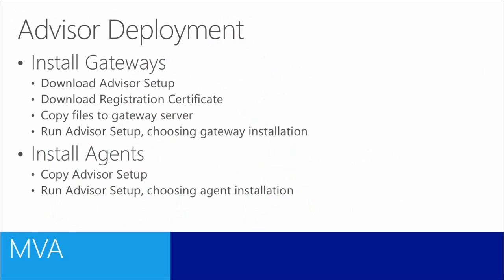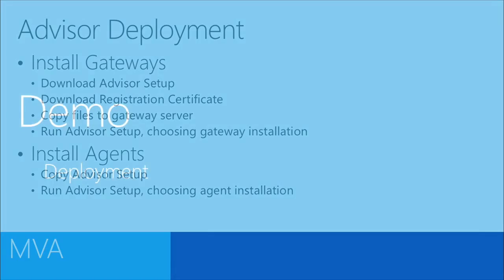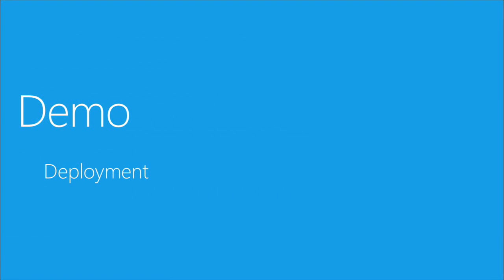These are the steps that you need to perform to install Advisor at a glance. You basically need to install gateways and agents using the Advisor setup. We'll also need to download a registration certificate to identify ourselves as a user. We'll copy the files to whichever machine needs to be turned into a gateway or an agent, and once we're running the Advisor setup, we'll choose the appropriate installation. Now I'm going to move into a different machine where I'll show you how to deploy Advisor on its own.